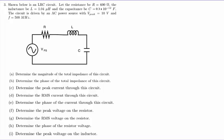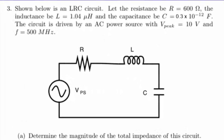Shown below is an LRC circuit. The resistance is 600 ohms, the inductance is 1.04 microhenry, and the capacitance is 0.3 times 10 to the minus 12 farads, or 0.3 picofarads. The circuit is driven by an AC power source whose peak voltage is 10 volts and whose frequency is 500 megahertz.